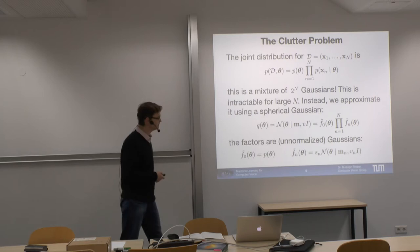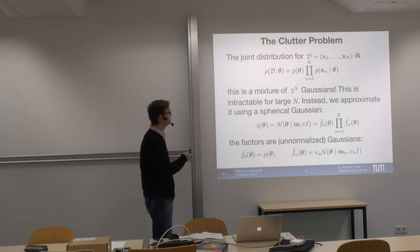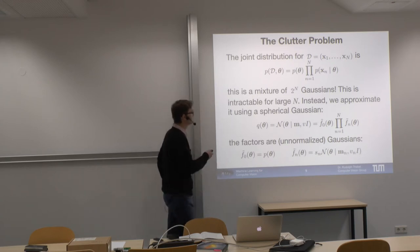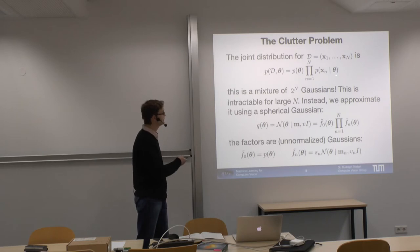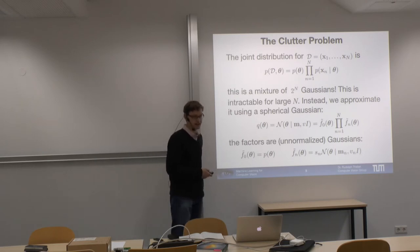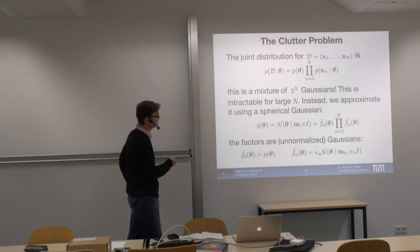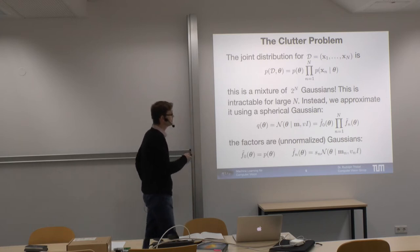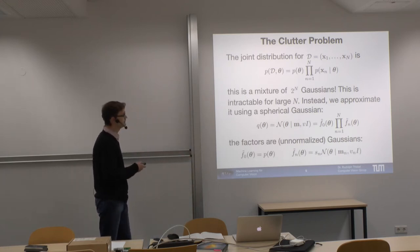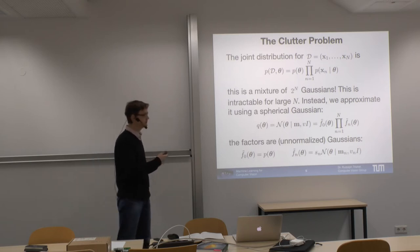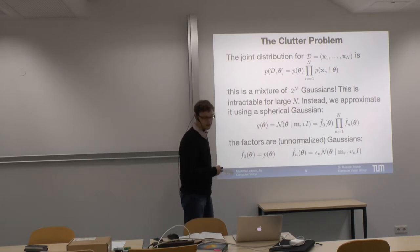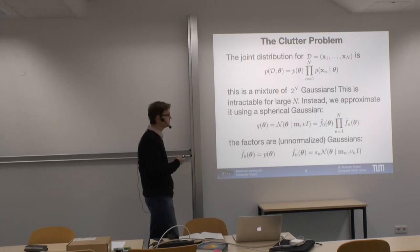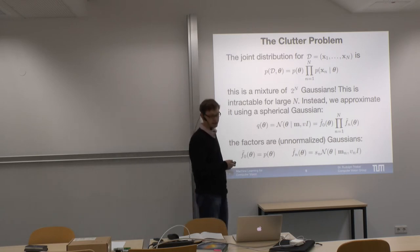If we do this in a straightforward way, we have data set X_1 to X_N. We can compute the joint distribution, which is simply the prior times the product of likelihoods. The problem is that all these likelihoods — there are N of them — result in a mixture of 2^N Gaussians. Each likelihood is a sum of two Gaussians, and multiplying N of them gives 2^N Gaussians. For large N, we can't compute that directly or exactly.